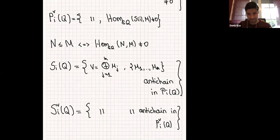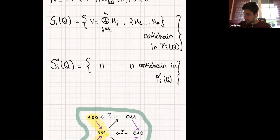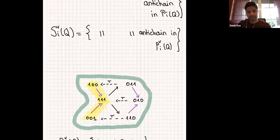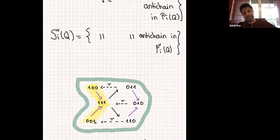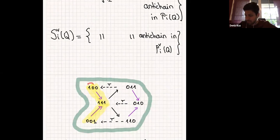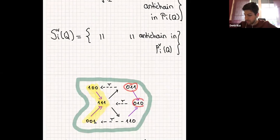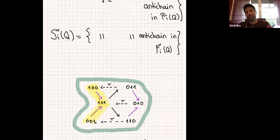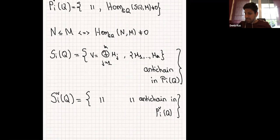Now I wrote the roots: this is α1, this is α1+α2+α3, this is α3, this is α2+α3, this is α2, and this is α1+α2. Let's compute P1^∨: we want all M such that there is a homomorphism from S1 = (1,0,0) to M. From α1 = (1,0,0) you have maps to (1,1,1) and also using the Auslander-Reiten translation, paths give you three elements in P1^∨.